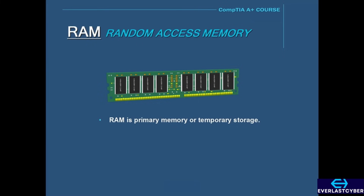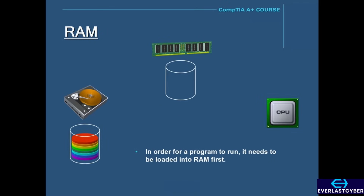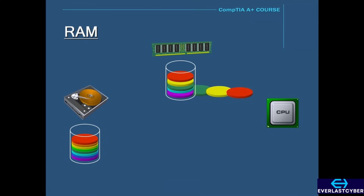RAM stands for Random Access Memory. In order for data or a program to run, it needs to be loaded into RAM first. The data or program is stored on the hard drive, and then from the hard drive it is loaded into RAM. Once it's loaded into RAM, the CPU can now access the data or run the program.